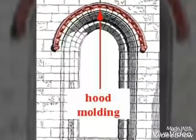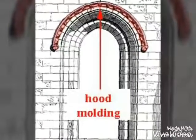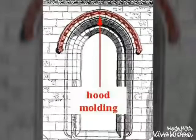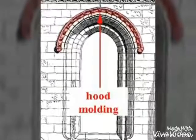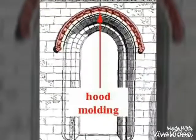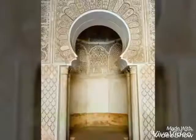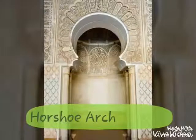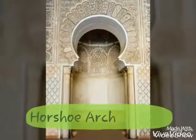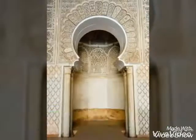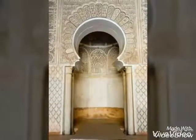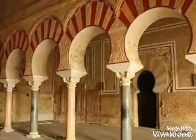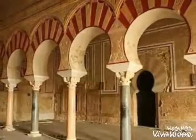Hood molding: a protective molding over a door or window, usually intended to direct rainwater from the face of the wall. Horseshoe arch: a rounded arch consisting of more than half a circle, so that the widest span of the arch is larger than the opening at the bottom of the arch.